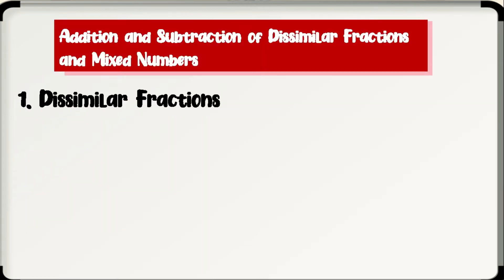To add or subtract dissimilar fractions, change them to similar fractions by finding their least common denominator or LCD. Then apply the rule in adding or subtracting similar fractions. Reduce the answer to lowest term if necessary.